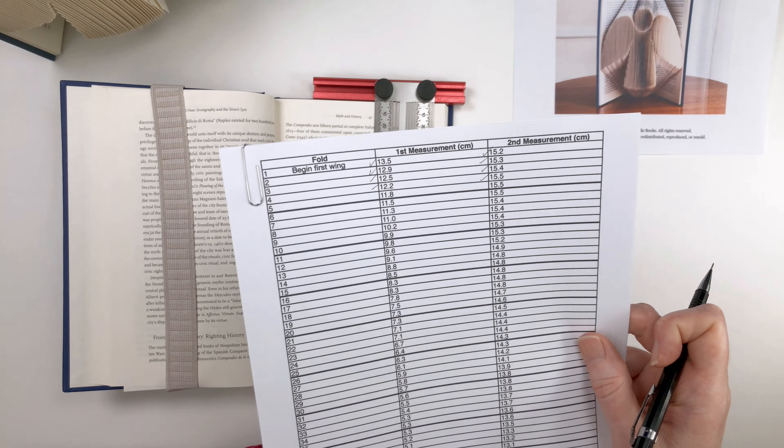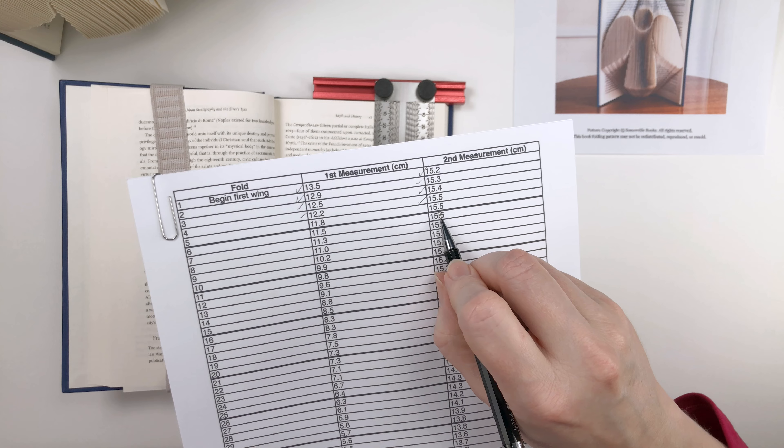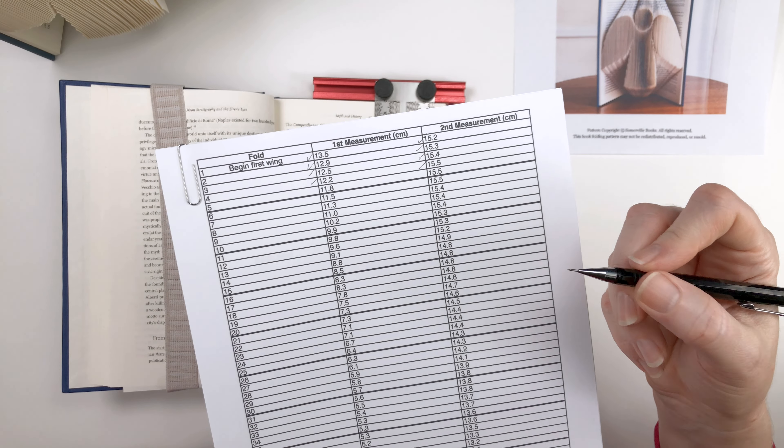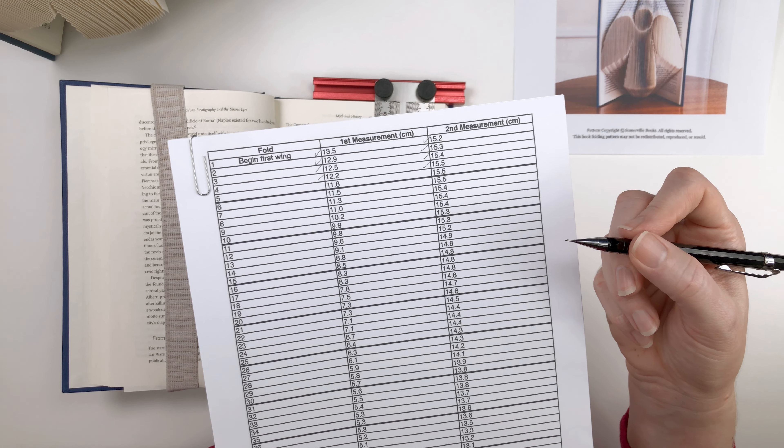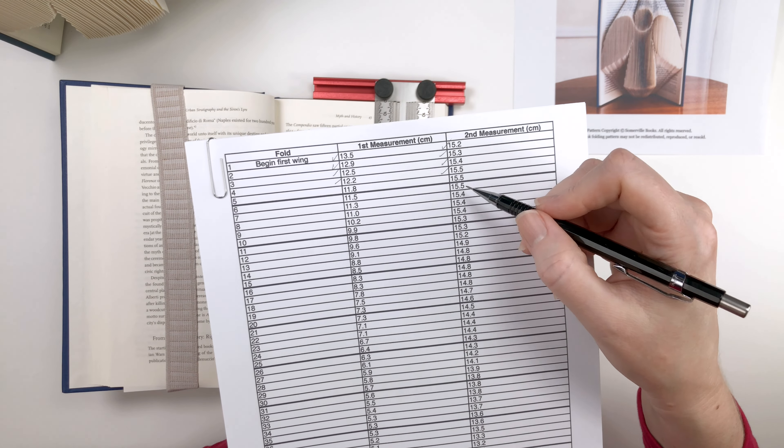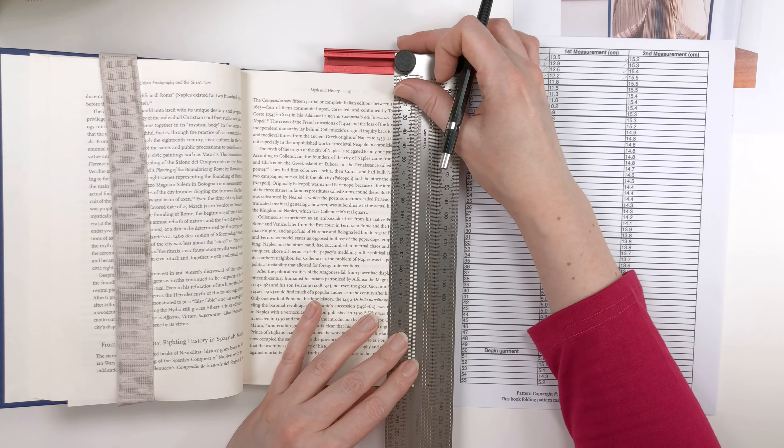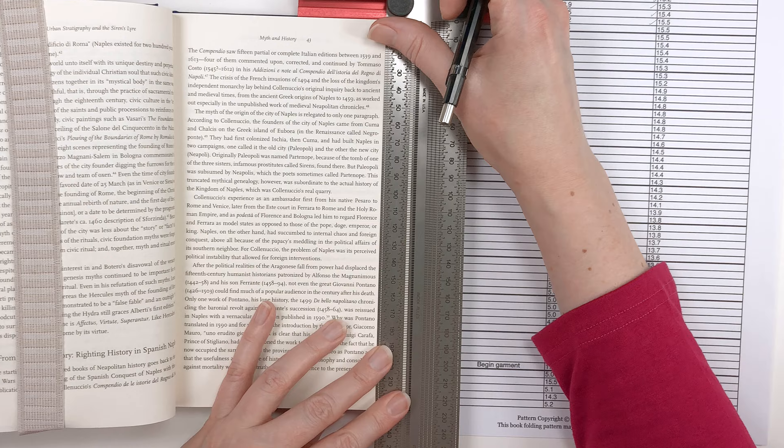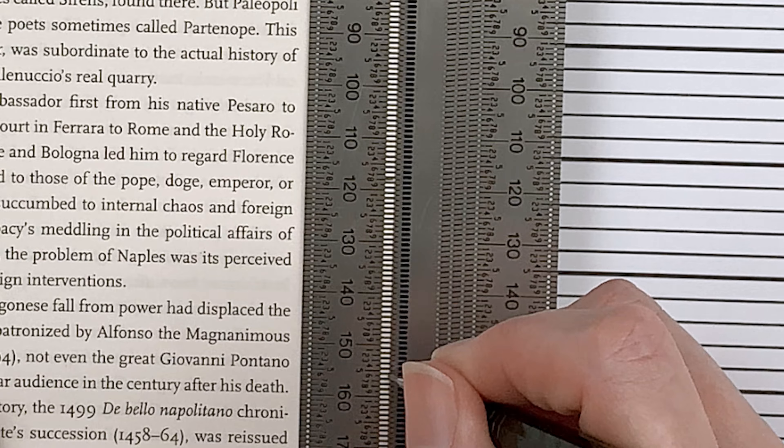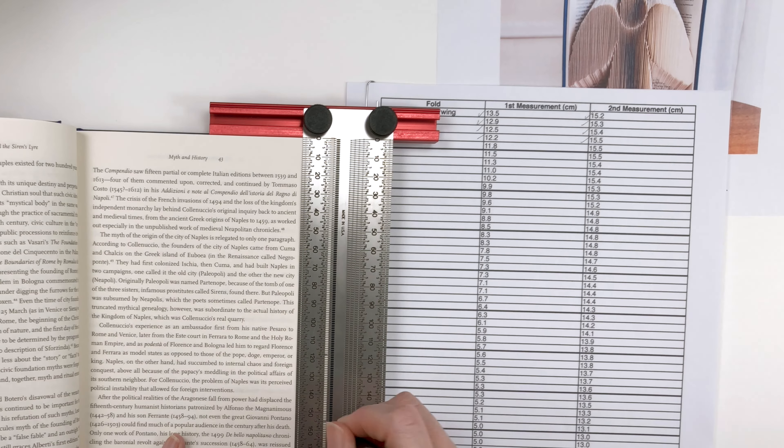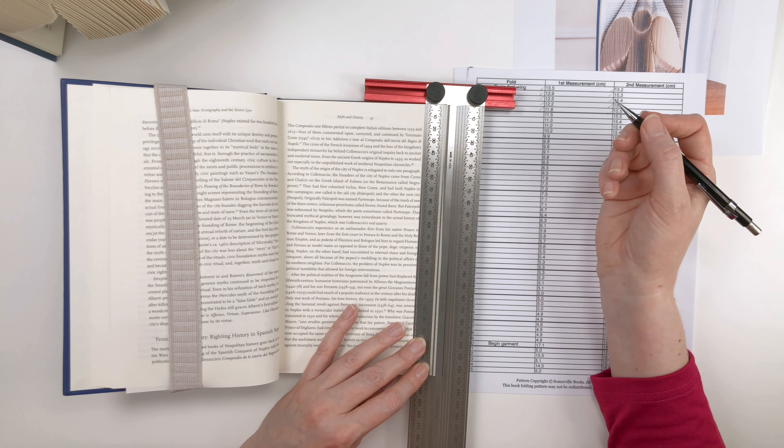Fold number four, 12.2 and 15.5. And for fold number five, measurements 11.8 and 15.5 again. And sometimes the measurements in a pattern will repeat. That is not an error. It just helps build up a section of the pattern. So we'll mark 11.8 and 15.5 again.